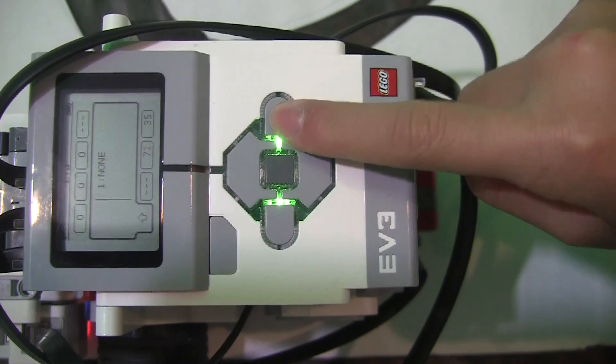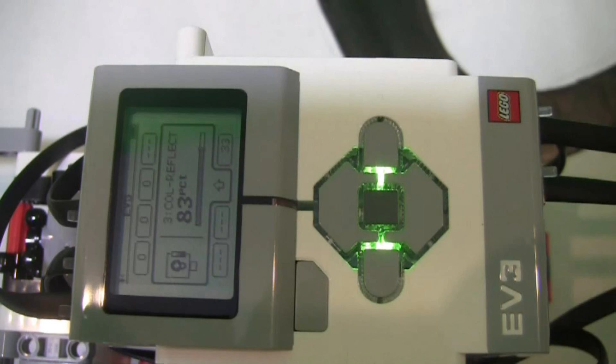Click the right brick button twice to see the Port 3 value. It shows 3, Color reflect, 83%.